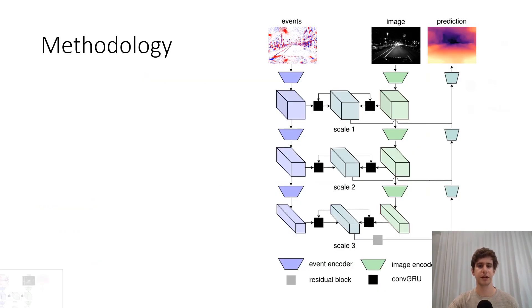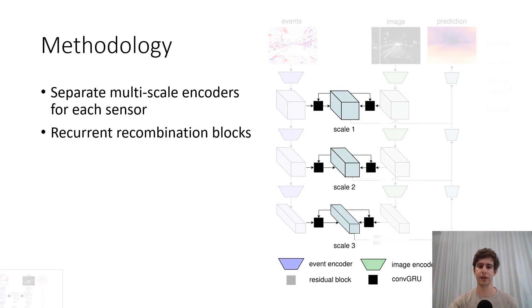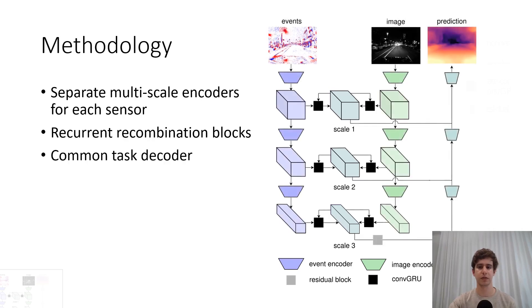RAM-Net features separate multi-scale encoders for each input sensor. The intermediate features thus generated are then combined using recurrent recombination blocks into a single global feature. These global features are then decoded into a task variable using a common task decoder. This architecture results in asynchronous input processing and anytime output predictions.